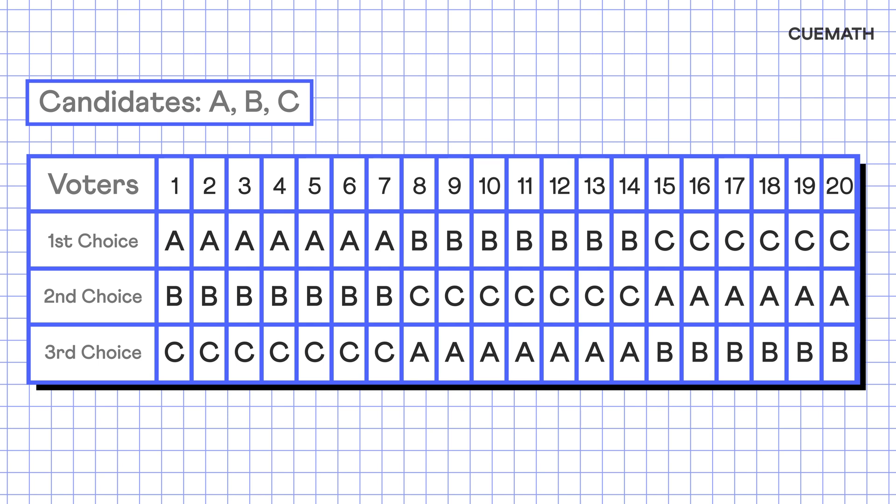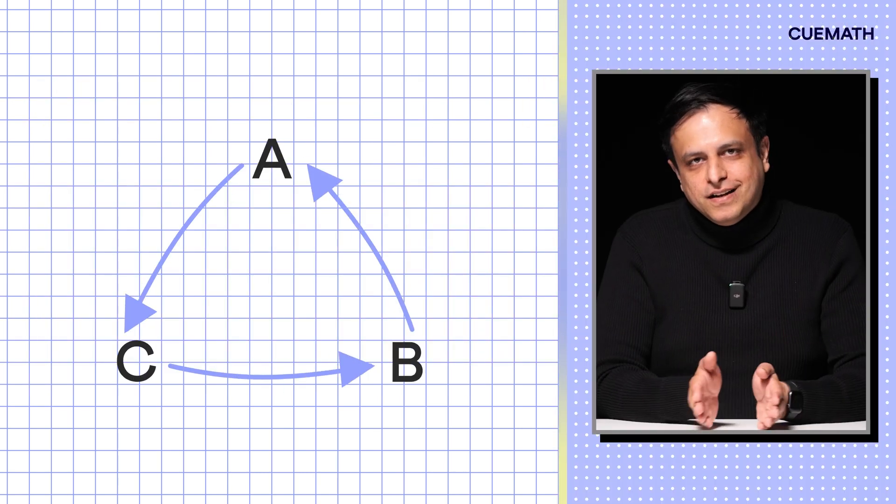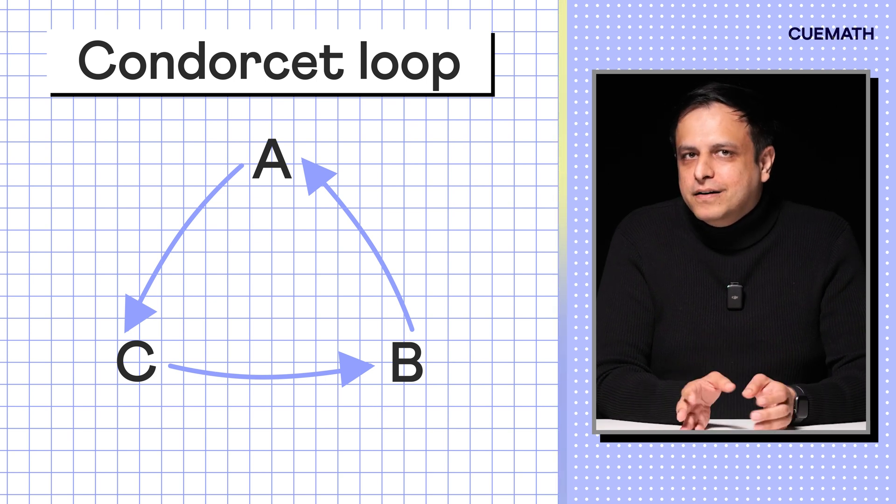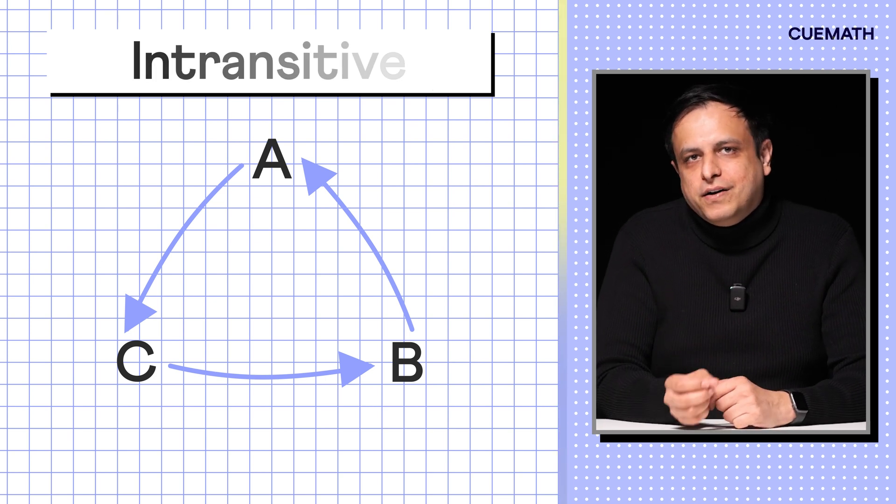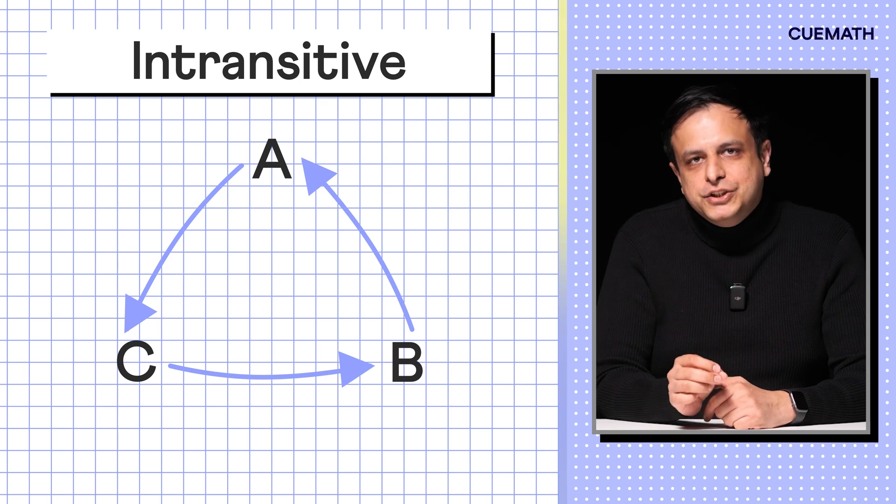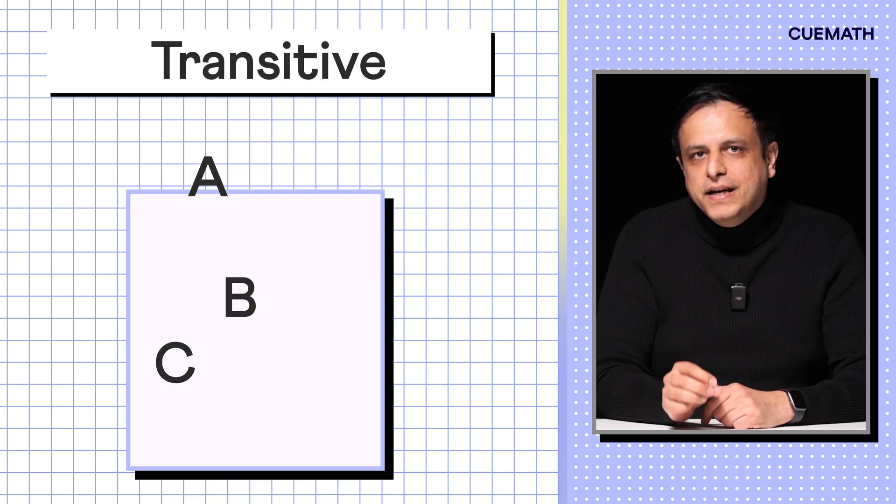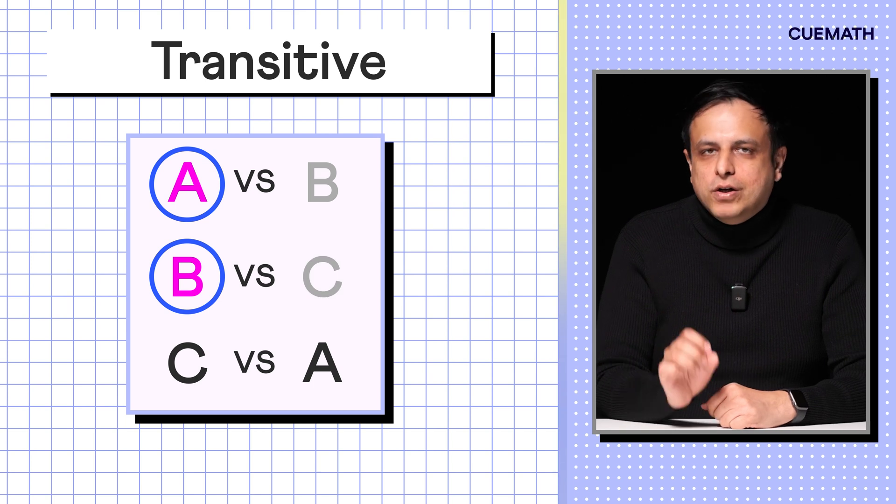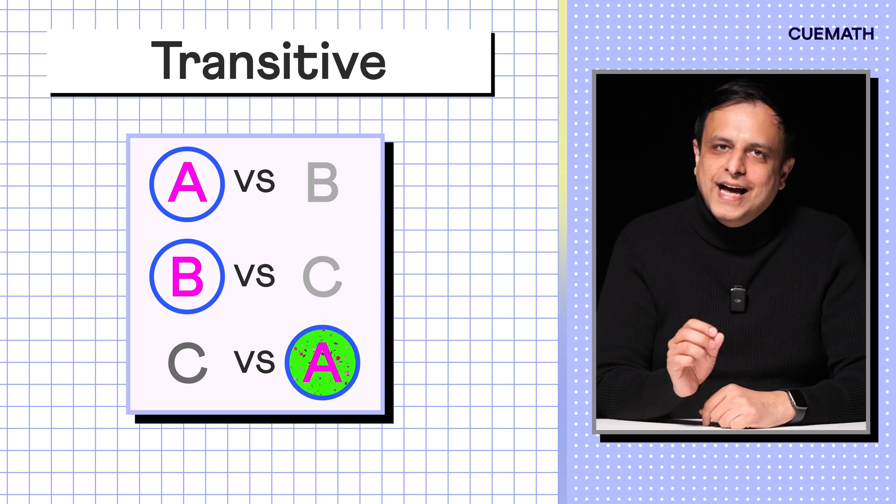But in our original example, if we hold head-to-head contests, A beats B, B beats C, and C beats A. This creates a cycle known as the Condorcet loop, where there is no clear winner. In mathematical terms, this outcome is intransitive. Ideally, elections should be transitive, meaning if voters prefer A over B and B over C, they should logically prefer A over C as well.